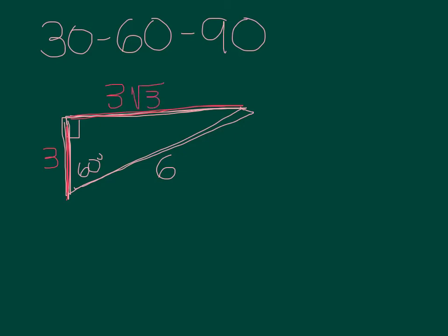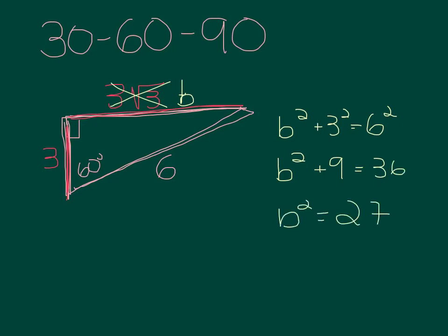But let's just verify that using the Pythagorean theorem. So we'll call this b. Let's pretend we don't know it. So b² + 3² = 6². b² + 9 = 36. b² = 27. So b equals the square root of 27.